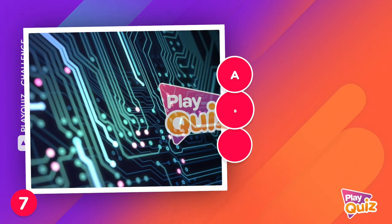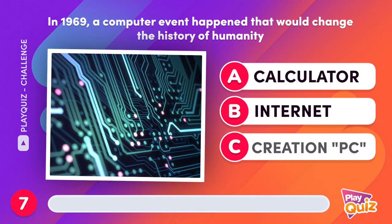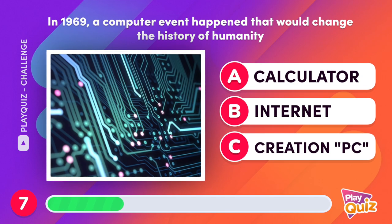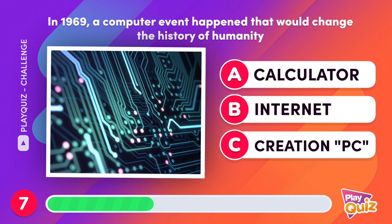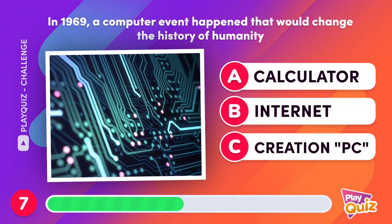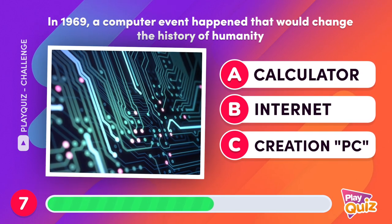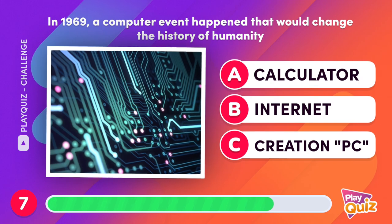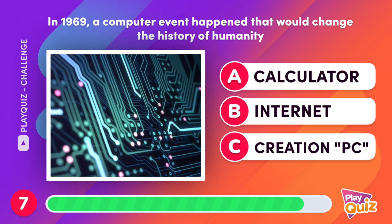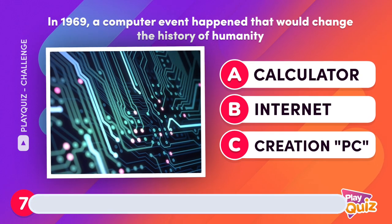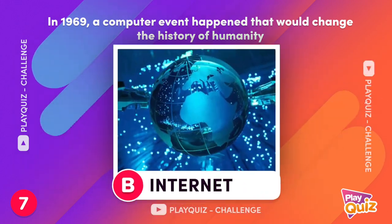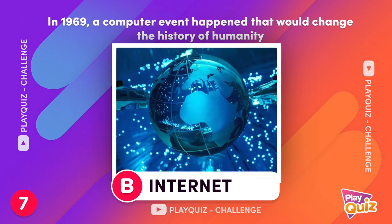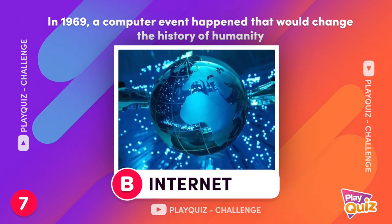In 1969, a computer event happened that would change the history of humanity. What is it? The Internet. In that year, the first interconnected network was born.